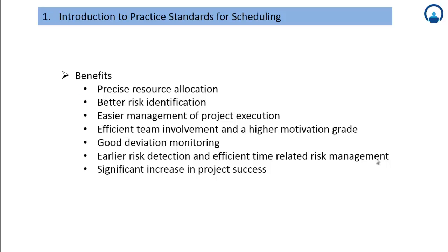Scheduling enables better risk identification — understanding current and foreseen risks. If a risk is identified, a risk action plan and mitigation plan can be developed. This feeds into the risk register, where you define the priority of each risk, how much risk can be handled at each point in time, and which risks are on the critical path. All these factors support easy management of project execution, especially for large, complex projects where resources and end-to-end visibility are critical.